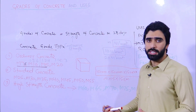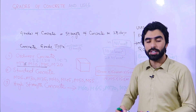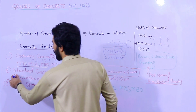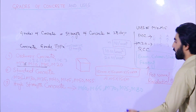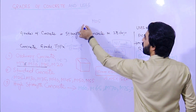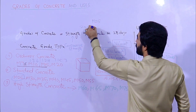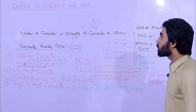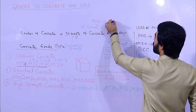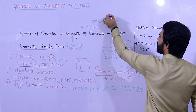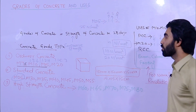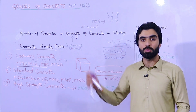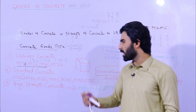Standard concrete can also be used for columns, beams, and slabs. According to different structure loads, we select the appropriate grade of concrete. M25 has a compressive strength of 25 Newton per mm² after 28 days, and its mix ratio is 1:1:2 — one part cement, one part sand, and two parts crushed aggregate. From M25 to M55, standard concrete is used for mega projects depending on the structure.